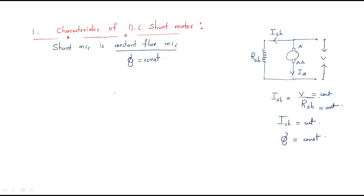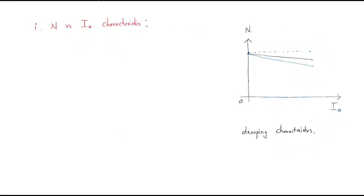The first characteristic is speed versus armature current. To understand the speed characteristic, we use the speed formula: speed is proportional to back EMF Eb and inversely proportional to flux. Since flux is constant here, speed is proportional to Eb.